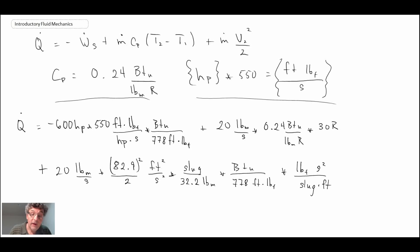So with all of that, we plug it in. We have to do a conversion between foot pound force and BTU here. But what we get is we get Q dot is minus 277 BTU per second.